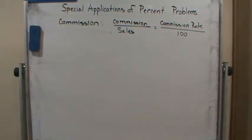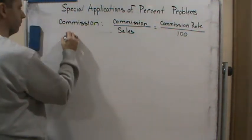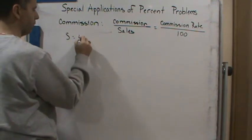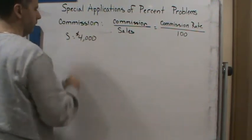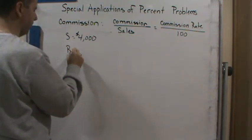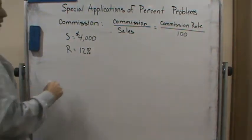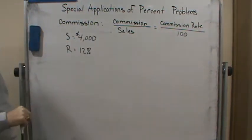Let's do some examples. Suppose your job as a lumber broker pays 12% commission on all sales. How much do you earn from a sale of $4,000? So sales equals $4,000, and my commission rate is 12 percent. What I'm looking for is my commission — how much do I make?